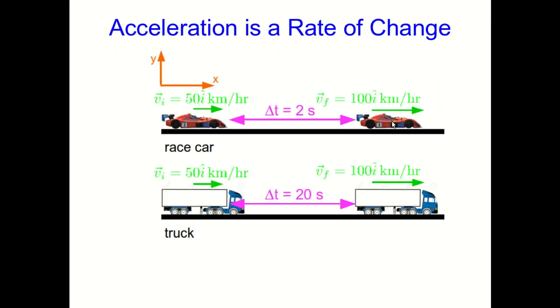Let's think about a race car and a truck, both moving parallel to the x-axis and speeding up so that they start going 50 kilometers per hour and end going 100 kilometers per hour. Note my vector notation—the i-hats here are just saying that these are velocities in the x direction. For a race car, it's perfectly reasonable to think that it can go from 50 kilometers per hour to 100 kilometers per hour in two seconds, or in fact less, but let's say two seconds. The truck though, depending on how heavily loaded it is, might take 20 seconds.